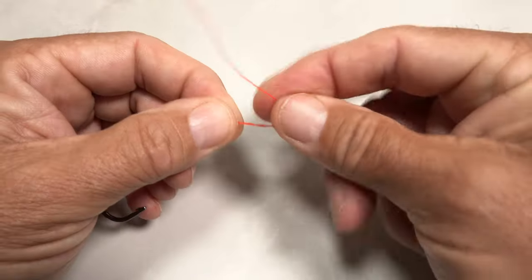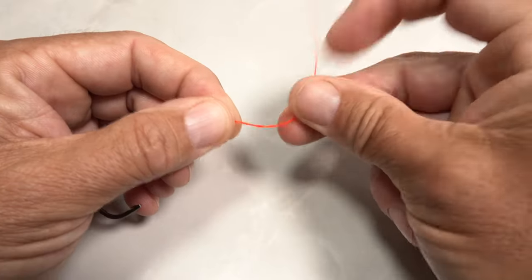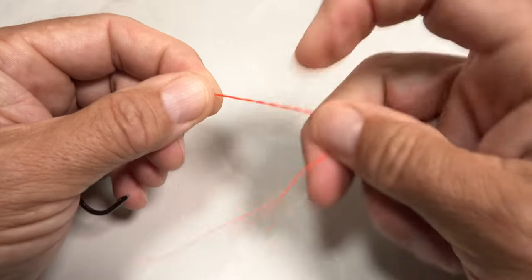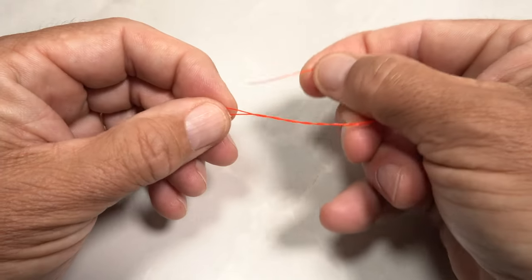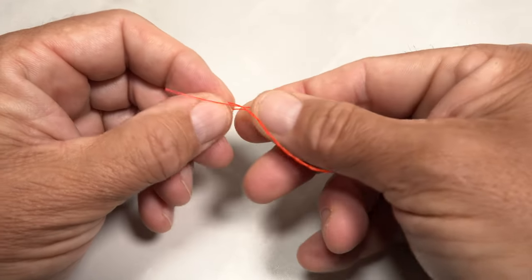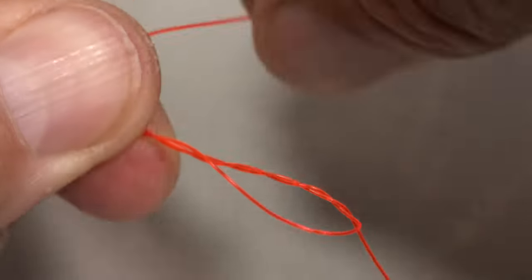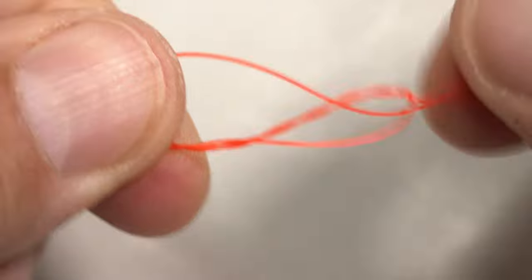There are two important variations on the clinch knot. The first is the improved clinch, where everything is the same up to the point just prior to seating the knot. Rather than simply leaving the tag end down by the hook eye, bring it around and pass it through the loop formed after wrapping, like so.